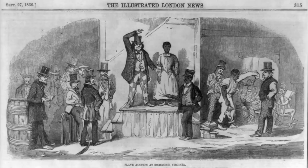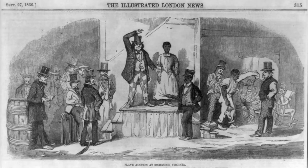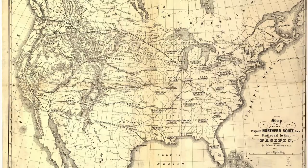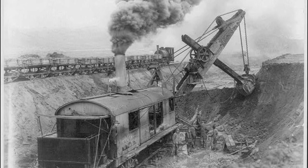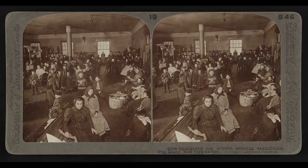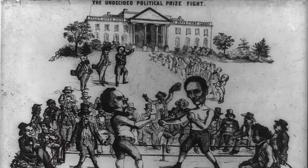Lincoln believed that slavery should not be legal in the territories. Lincoln regards it as a moral, social, and political evil. Lincoln, the Republican Party candidate, wants government to support building a railroad to the Pacific Ocean. He believes that immigrants should be allowed to come to the United States. He advocates that the United States remain one nation.